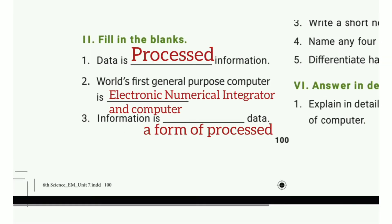Fill in the blanks. First one: Data is blank information. The answer is processed information. Second one: Where the first general purpose computer is blank? The answer is Electronic Numerical Integrator and Computer.